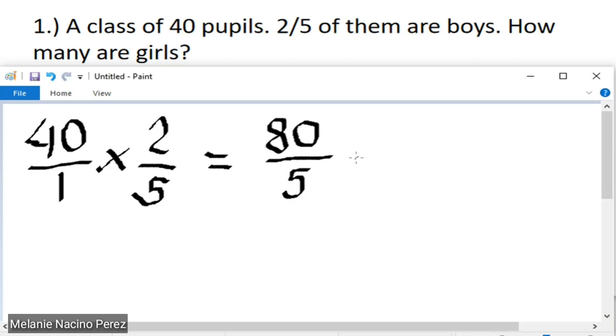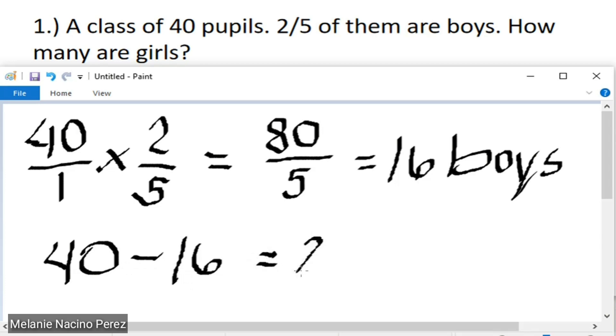And then, to find the value of the fraction, we need to divide. So, 80 divided by 5 equals 16. So, we have 16 boys. This is the two-fifths of 40. So, how do we find out how many are girls? All we need to do is subtract 40 minus 16. So, 40 pupils minus 16 boys is equivalent to 24. That means we have 24 girls.